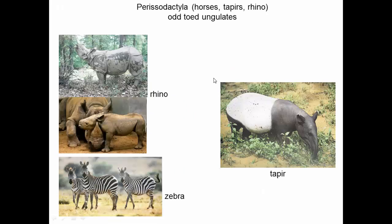Perissodactyls are horses, tapirs, and rhinos. Rhinos have the cutest babies; horses and zebras look like this; and this is a tapir — if you've seen the movie Apocalypto, this is the animal killed at the beginning. They don't get much press otherwise. These are odd-toed ungulates: horses have one hoof, rhinos have three. Together with artiodactyls these form the ungulates, though that would actually be a paraphyletic group since it would exclude whales.